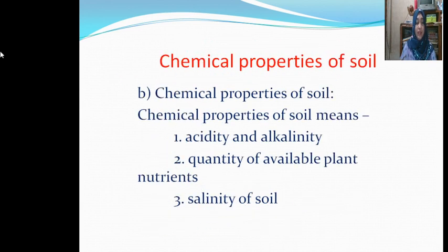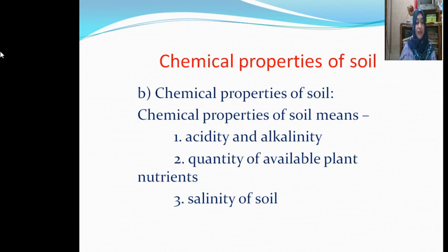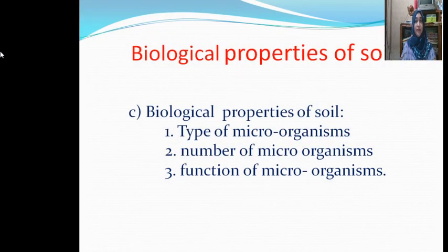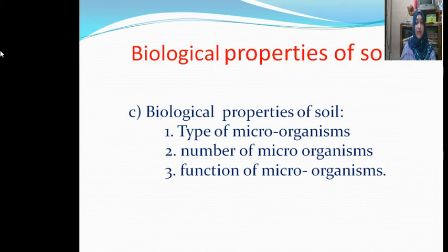Chemical Properties of Soil include: 1. Acidity and Alkalinity, 2. Quantity of Available Plant Nutrient, 3. Salinity of Soil. Biological Properties of Soil include: 1. Type of Microorganisms, 2. Number of Microorganisms, 3. Functions of Microorganisms.